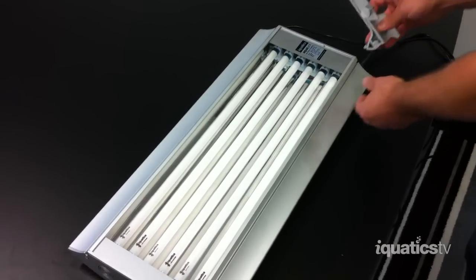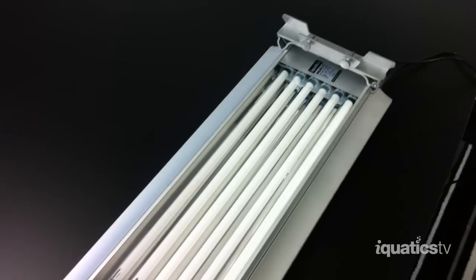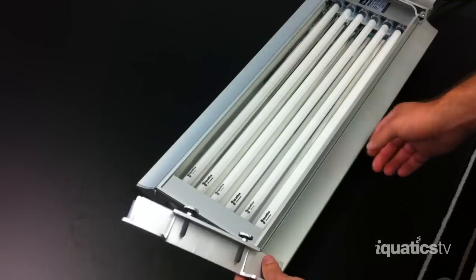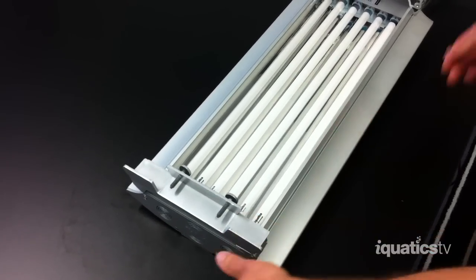Attach the tank mounting brackets to the Aqualumi in the groove provided. Make sure that the tightening nuts are facing the inside of the unit as demonstrated. If you require the power cables to be on the opposite side, then please swap the brackets and fix on the opposite ends.